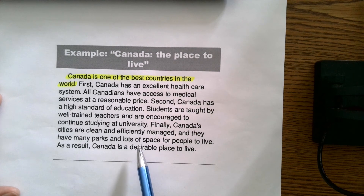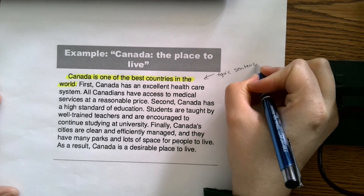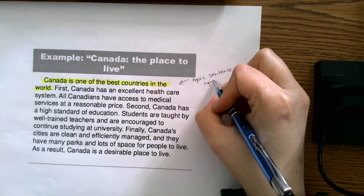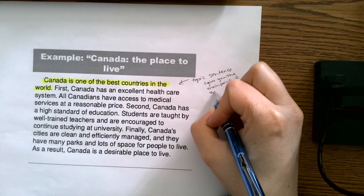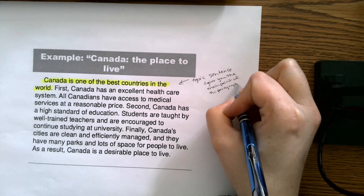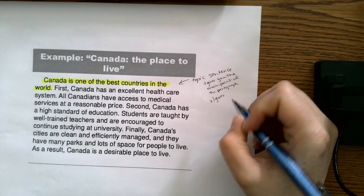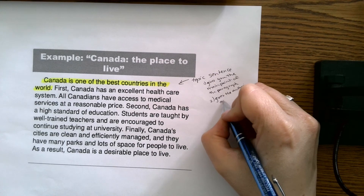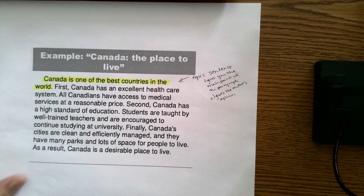It's clear that the first sentence is the topic sentence because, one, it tells you what the whole paragraph is about — it gives you the main point of the paragraph. And it also clearly expresses the author's opinion. He or she is making an argument that Canada is one of the best countries in the world. So it gives us the main point of the paragraph and the author's opinion — it fits both definitions of a topic sentence. That first sentence is an excellent example of a topic sentence for a persuasive paragraph.